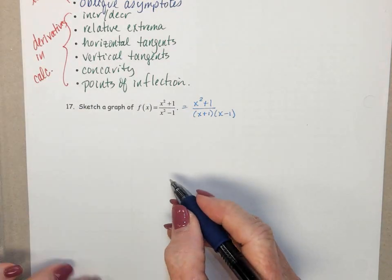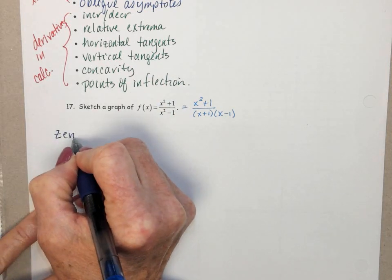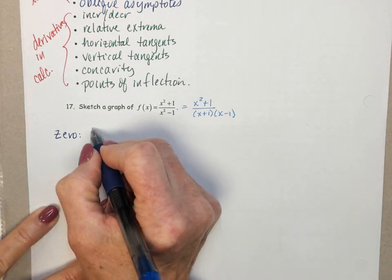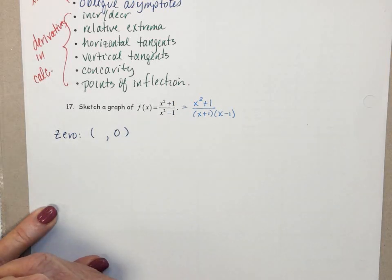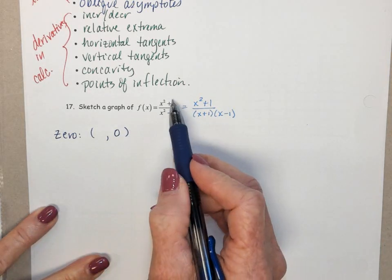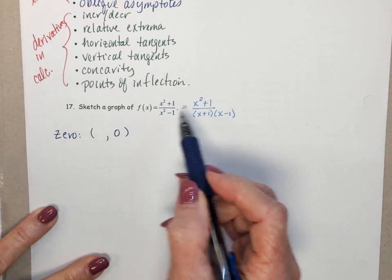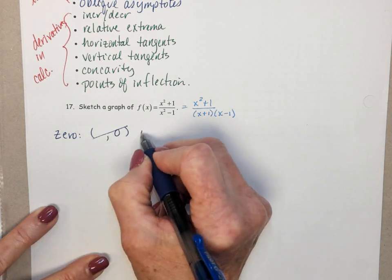And then finding all of our stuff out from pre-calculus. Let's look for our zeros first. Zero is going to be when that graph or that function is equal to zero. And the only way that this fraction can equal zero is if the numerator is equal to zero. And x squared plus 1 can never equal zero, so there aren't any here.